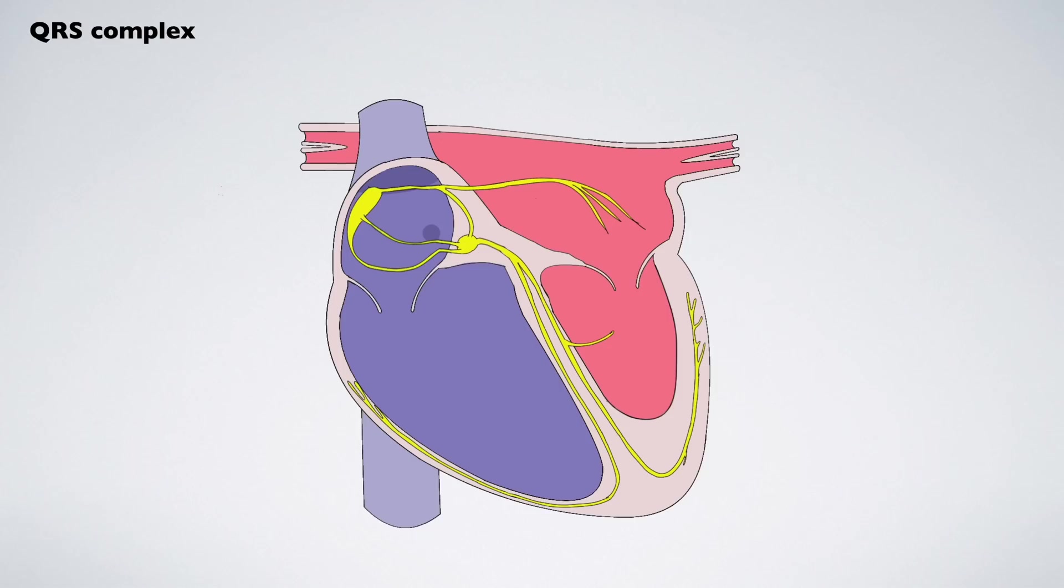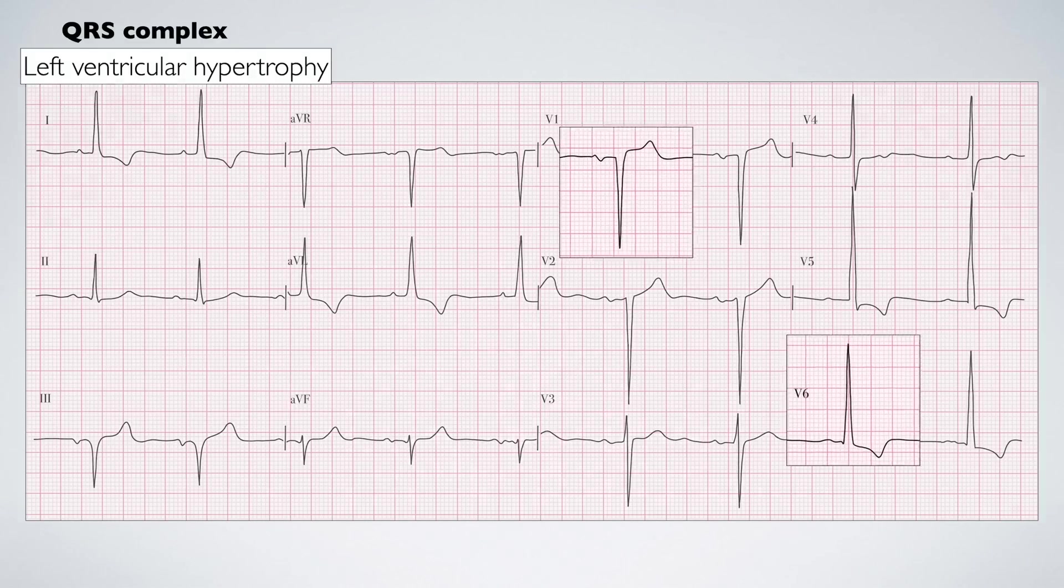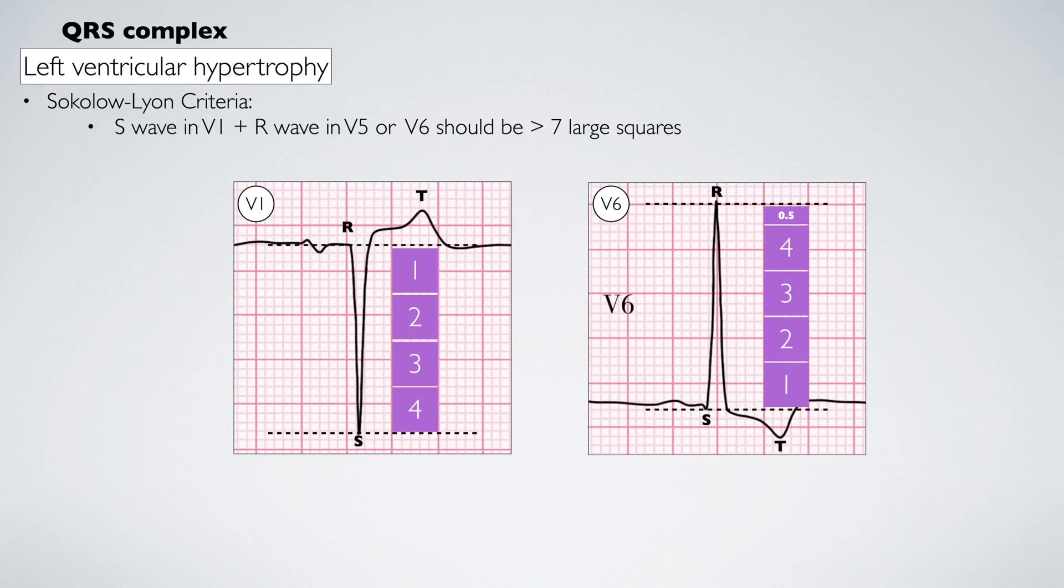First up is left ventricular hypertrophy. This is characterized by thickening of the left ventricular muscle. The thickened muscle generates a larger electrical charge. The Sokolow-Lyon criteria suggests left ventricular hypertrophy is likely present if the depth of the S-wave in V1, added to the height of the R-wave in either V5 or V6, is greater than 7 large squares. In our example here, the combined total is 8.5 large squares.